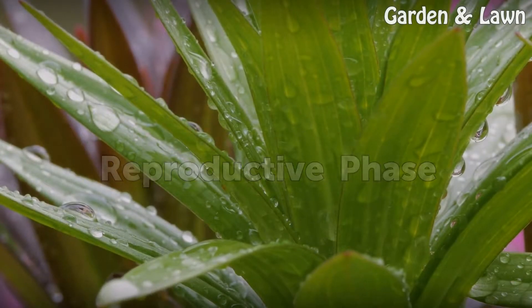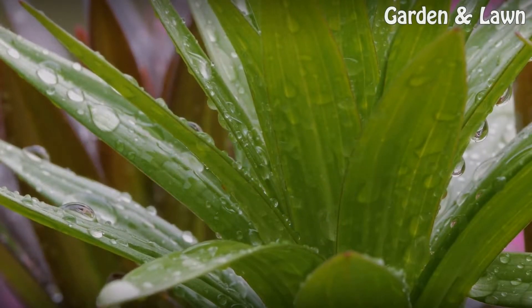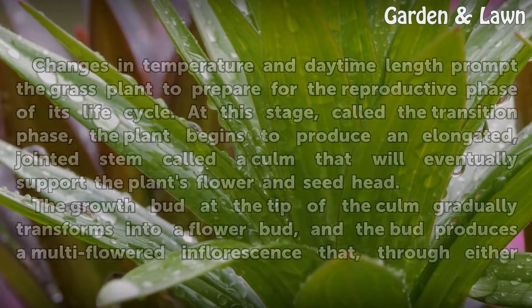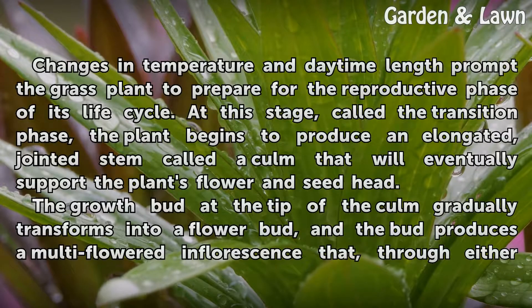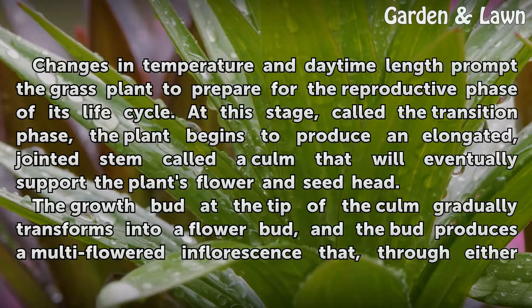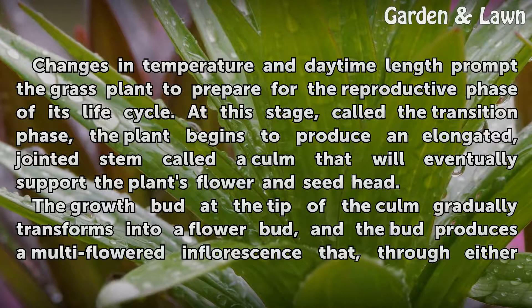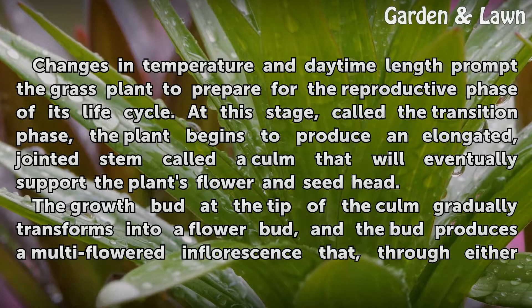Reproductive phase. Changes in temperature and daytime length prompt the grass plant to prepare for the reproductive phase of its life cycle. At this stage, called the transition phase, the plant begins to produce an elongated, jointed stem called a culm that will eventually support the plant's flower and seed head.